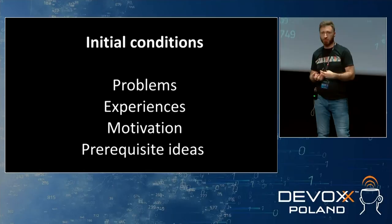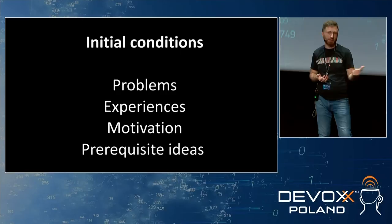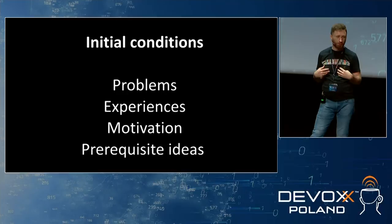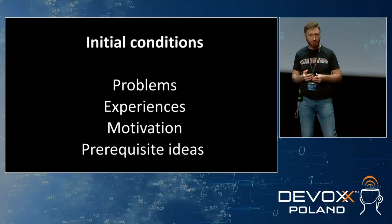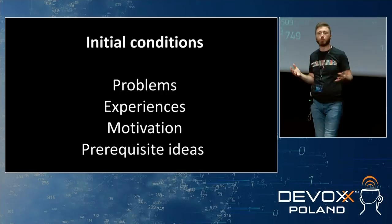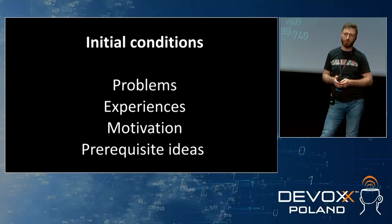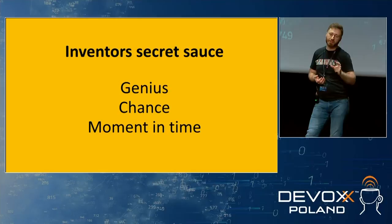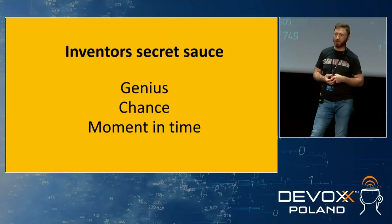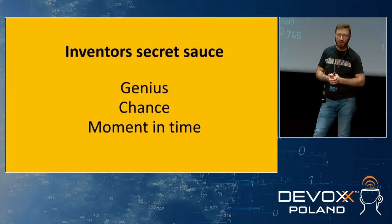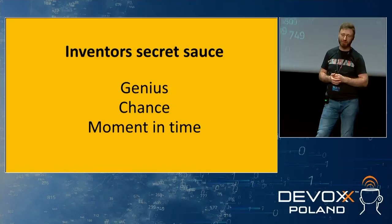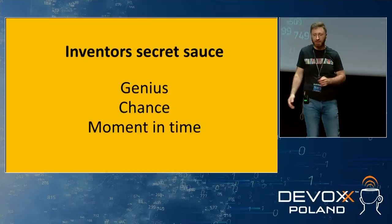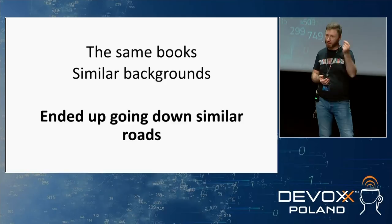When we see a problem we would like to solve, we have some initial conditions — the problem itself. But we also have experiences we gain from all over the world, motivation to solve the problem, and prerequisites — ideas that people found before us, all the legacy we take from previous people. There is also the secret sauce of inventors: the genius, the ideation thinking, which varies from person to person. And there are two more aspects: chance and moment in time. You need to be lucky — to be on time with your solution.